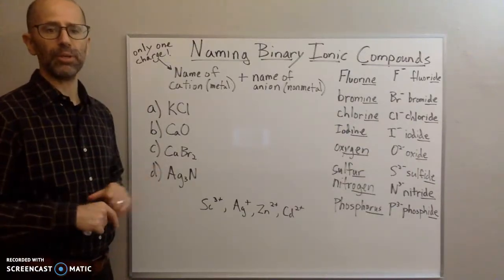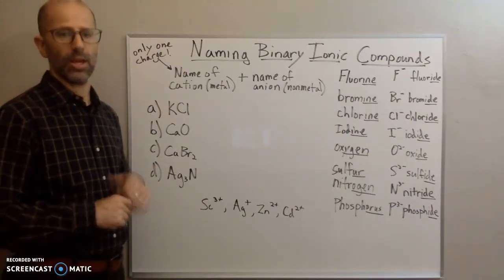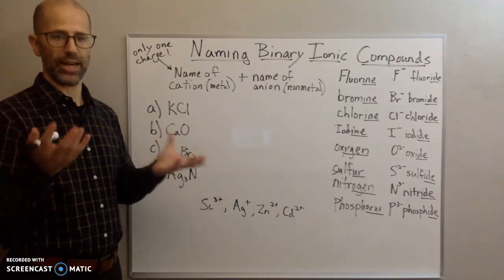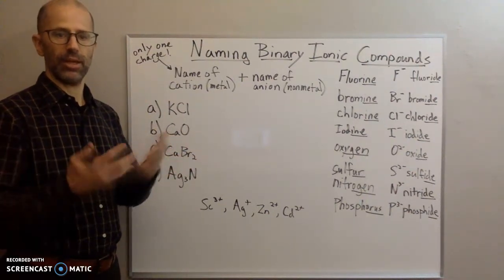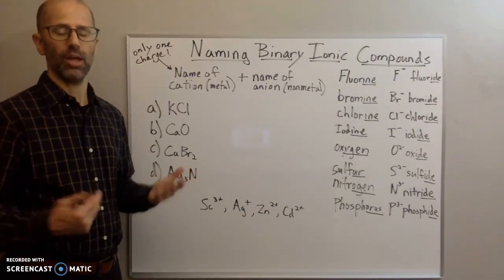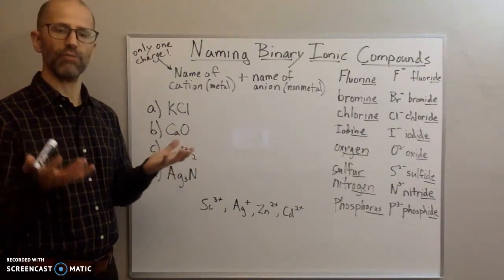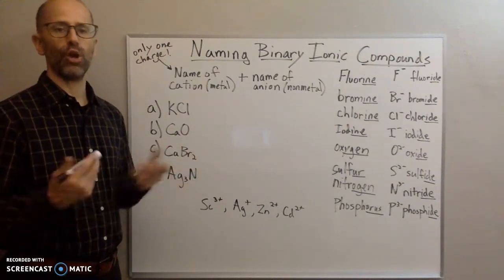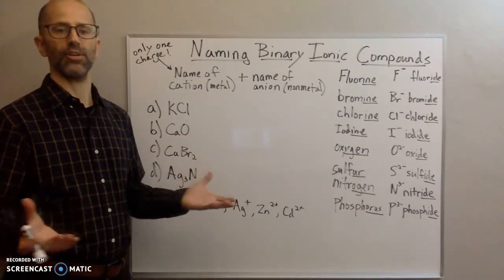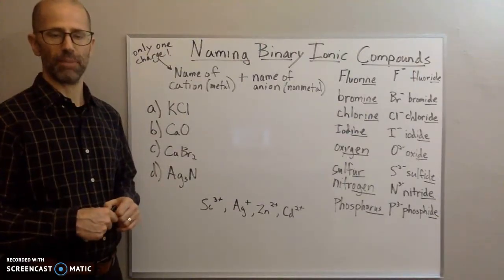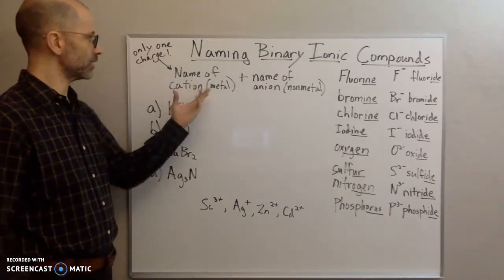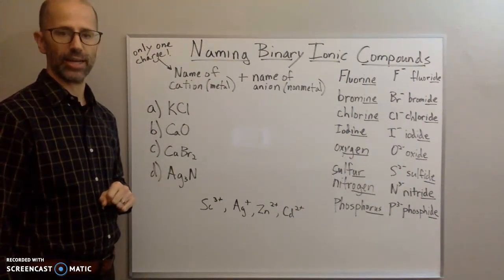This naming approach is common for all ionic compounds. The way you name an ionic compound is: if you know the names of the two ions, you simply put those names together and that becomes the name of the compound. It's that simple. All you need to do is know the names of your ions — if you know them, you put them together and that becomes the name of the compound.